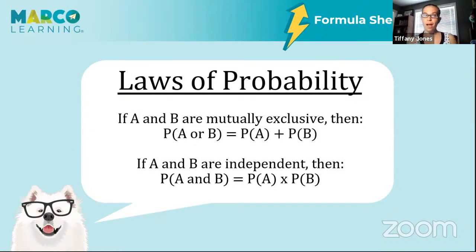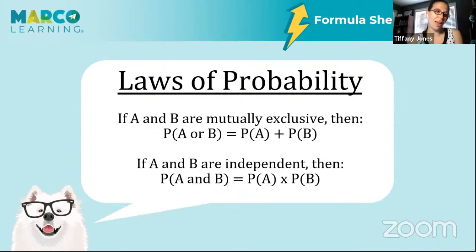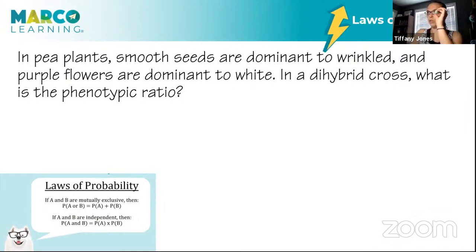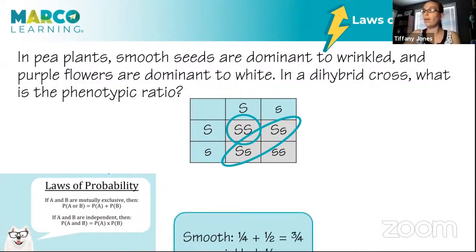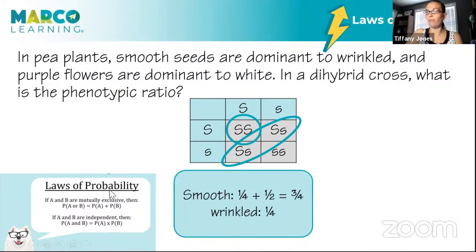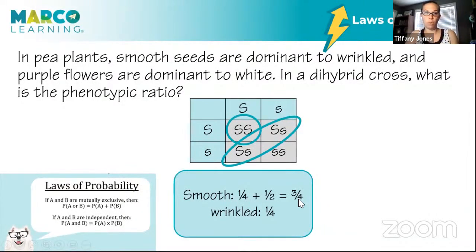Next are the laws of probability, usually seen with genetics problems. Smooth is dominant to wrinkled; purple is dominant to white. In a dihybrid cross, if I want to know how many are smooth, I say three-fourths are smooth — that's one-fourth homozygous dominant plus one-half heterozygous. This is the addition rule: when A and B are mutually exclusive events from the same reproductive event, you add the probabilities. So the probability of homozygous dominant plus the probability of heterozygous gives the probability of being smooth.